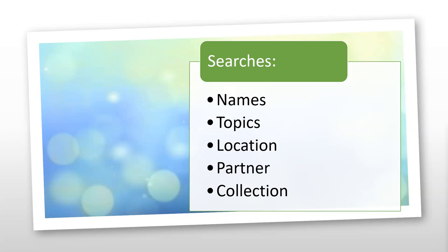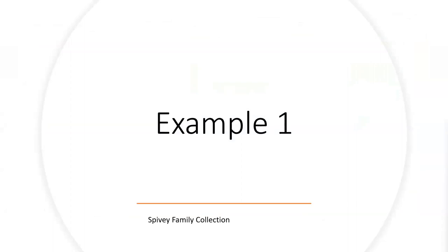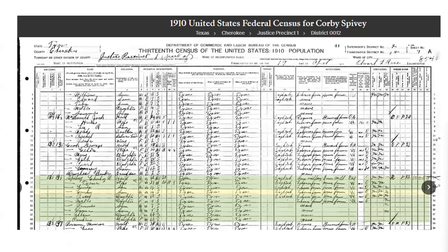Here's example one: using a family collection. There are a lot of different types of family collections from many partners on DPLA, and it's always worth exploring. You never know when your family — or a related family — may have left behind an archive or collection that was donated and then digitized and placed online. I randomly chose what's called a Speevy or Spivy family collection that I found through the DPLA website. Some of these documents would be traditional genealogical records you could find on most major sites; these are coming from Ancestry.